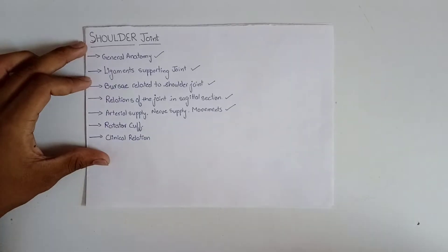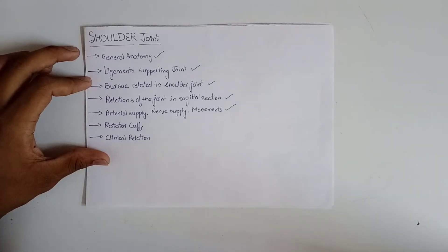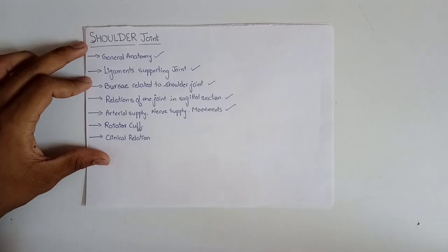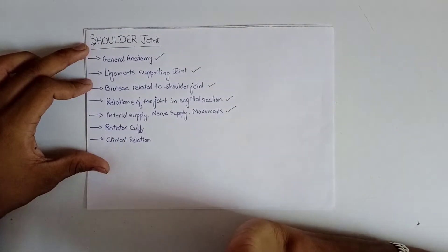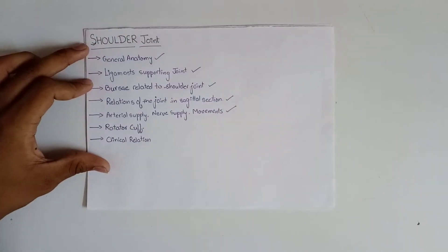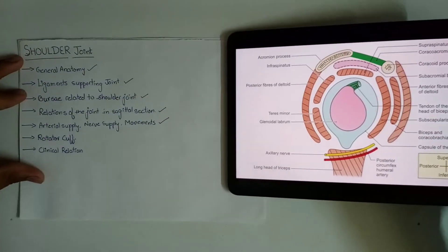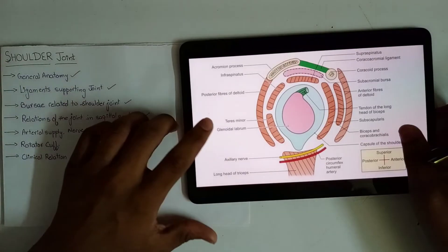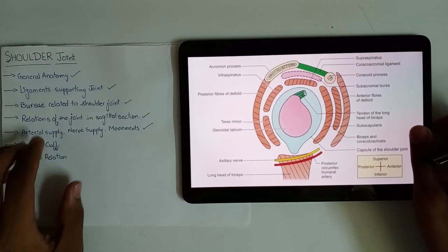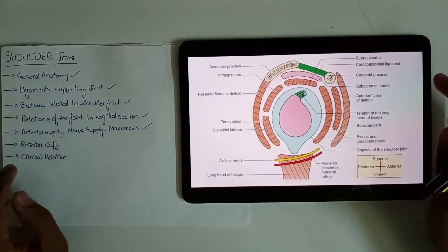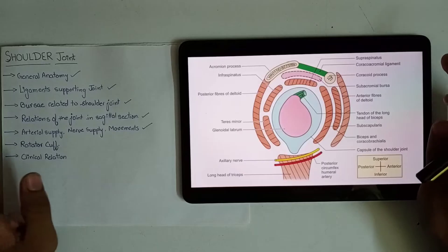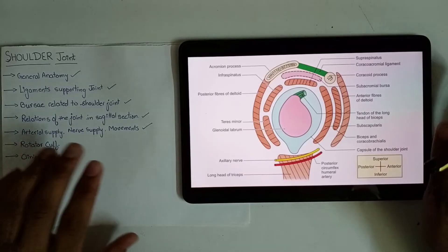Rotator cuff is an important topic from the university exam point of view, so make sure you complete this topic thoroughly. In the previous video we did the topic relations of joint in sagittal section. Revising that topic once will build the base for understanding rotator cuff.